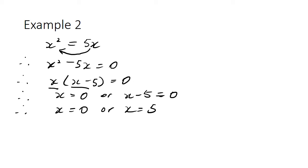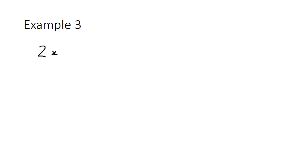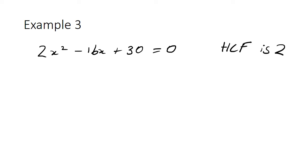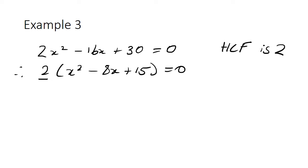As a third example, let's have a look at this quadratic equation: 2x squared take 16x plus 30 equals 0. The first thing we want to do is look for a highest common factor — in this case the highest common factor is 2. So we take this out and get 2 times x squared take 8x plus 15 equals 0. We can divide both sides by 2 and we end up with x squared take 8x plus 15 equals 0.